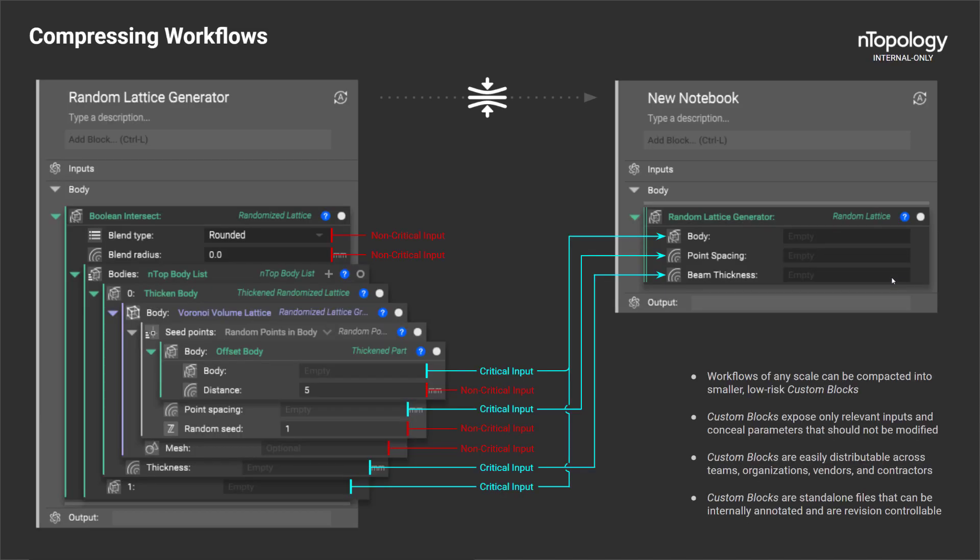For those of you not too familiar with custom blocks, a good way to think about them is to consider them as compartmentalized and compact versions of a set of blocks. Custom blocks have a variety of functionalities, but one of their most common uses is to take a handful of complex or non-intuitive blocks and combine them in such a way so that all the complexity is hidden and only what is important becomes available to the user. The biggest benefit this provides is the ability to take a really long or complicated workflow and condense it down to just one or two blocks.